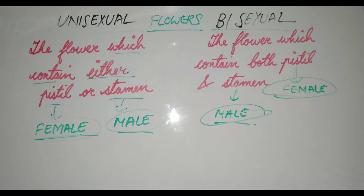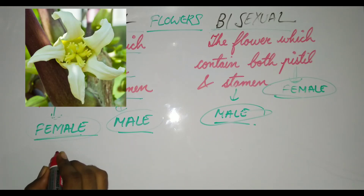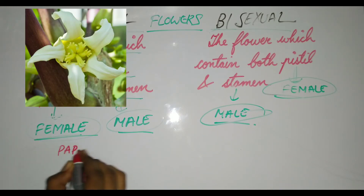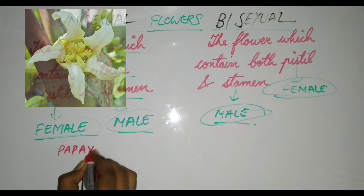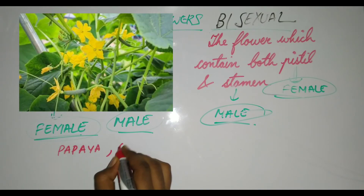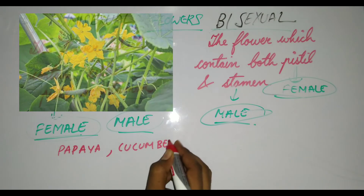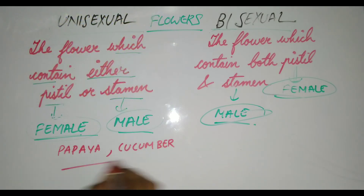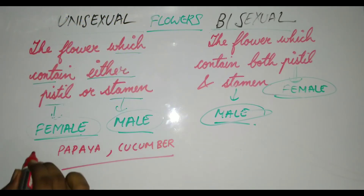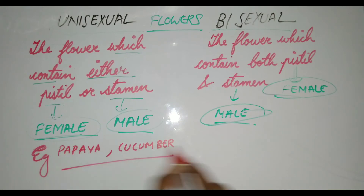Now let us see examples of unisexual and bisexual flowers. Examples of unisexual flowers include the flower of papaya and cucumber — these are all unisexual flowers.